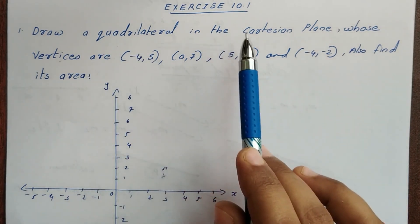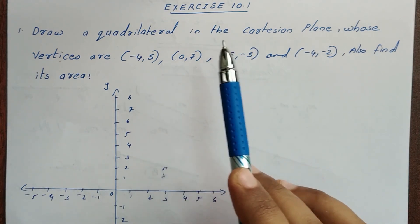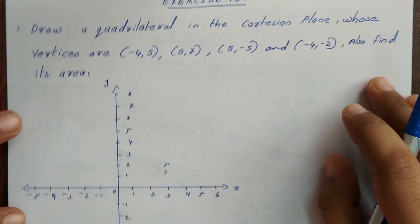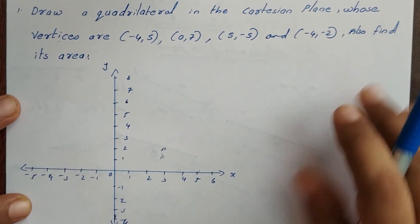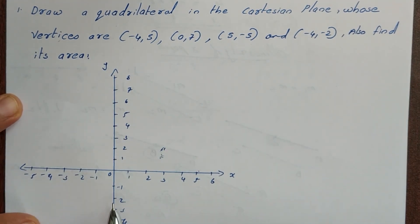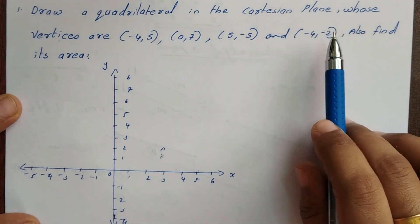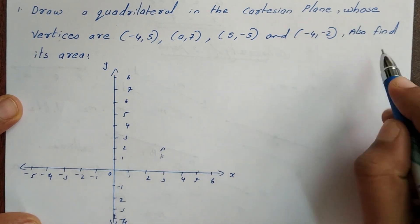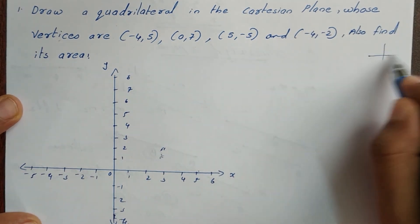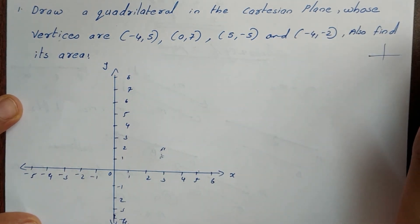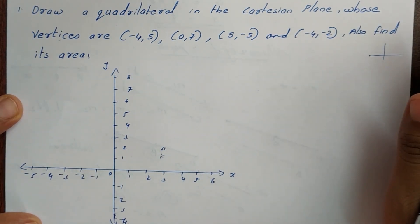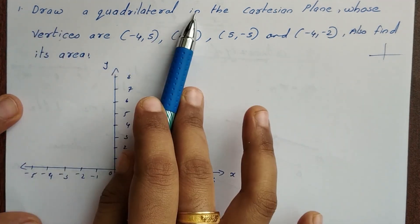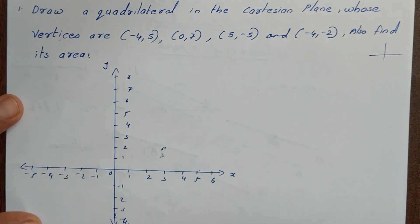Draw a quadrilateral in the Cartesian plane. You can find a fair figure here. In this chapter, you will find a rough figure. You can find a rough figure here and a fair figure here.